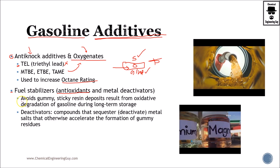Fuel stabilizers also avoid gummy or sticky resin deposits that result from oxidative degradation. So not only will you lose fuel, but you will get deposits — solid material — which will affect the performance of your automobile. Metal deactivators are required in order to avoid metal salts. Deactivators will sequester, or remove, metals from the gasoline, and this is done in order to avoid the accelerated formation of gummy residues.